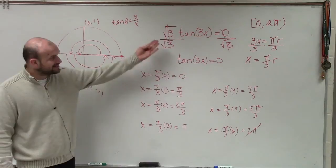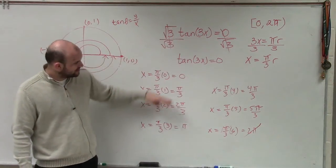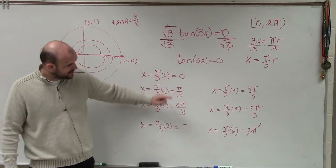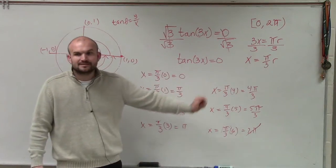So therefore, all the solutions between 0 and 2π of this equation is 0, π over 3, 2π over 3, π, 4π over 3, and 5π over 3.